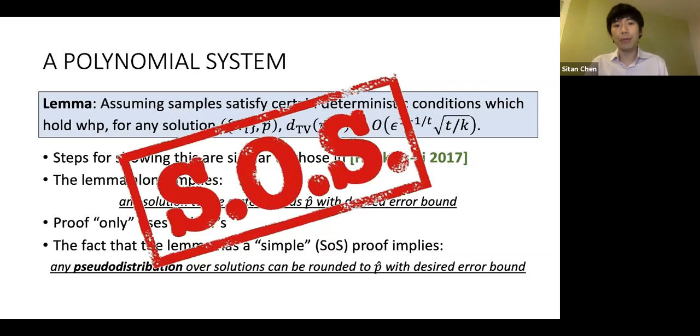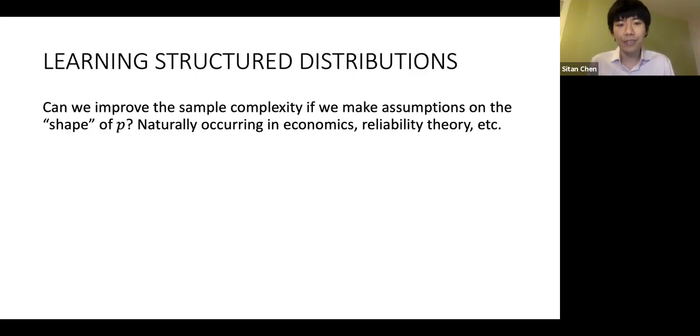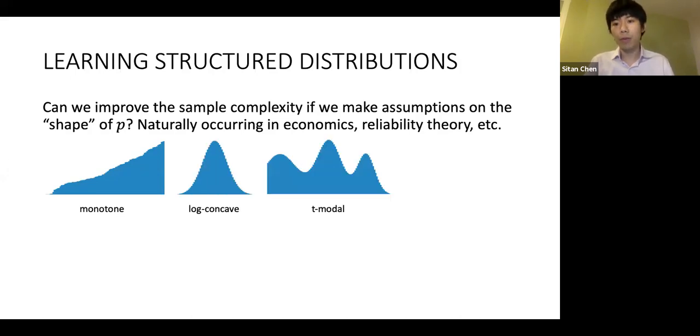So it's reasonable to ask, is there any way to improve the prohibitively large sample complexity we got from theorem 1 if we make additional assumptions about the underlying distribution p? These kinds of structural assumptions could be that the distribution is monotone, log-concave, multimodal, monotone hazard rate, and these sorts of assumptions are naturally occurring in areas like economics and reliability theory.